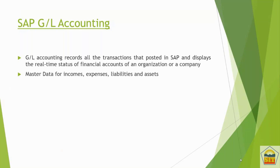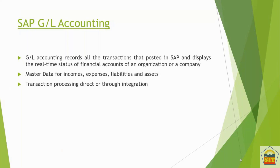In General Ledger Accounting, we create income accounts, expense accounts, liability accounts, and asset accounts. Income and expense are part of your Profit and Loss, and liability and assets are part of your balance sheet. Once these accounts are created, you start doing postings — transactions which can be manual or through integrations.